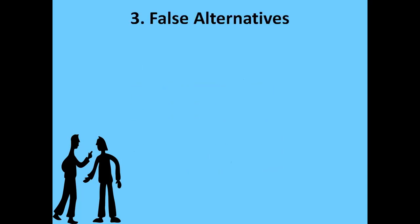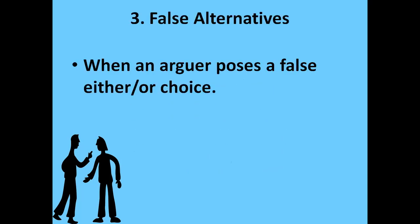The next kind is false alternatives. This occurs when an arguer poses a false either-or choice — two choices are provided, but those choices are false alternatives. Such a fallacy is called false alternatives.